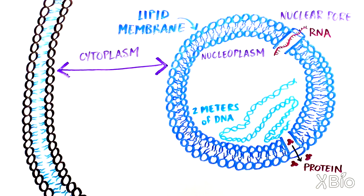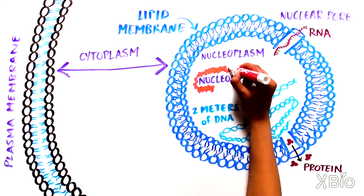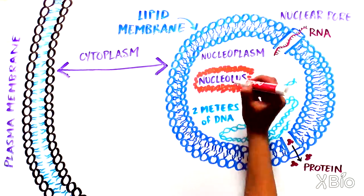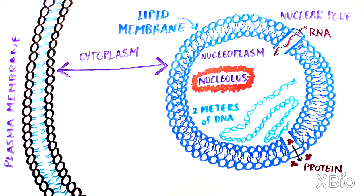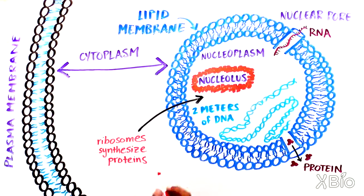The cytoplasm is the name for the entire space between the nucleus and the plasma membrane. Inside of the nucleus sits the nucleolus, an organelle within an organelle. The nucleolus, which is an example of a non-membrane-bound organelle, is involved in making ribosomes, particles that synthesize proteins.